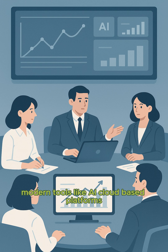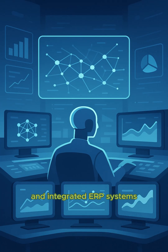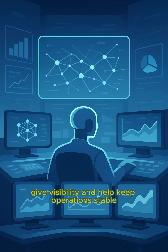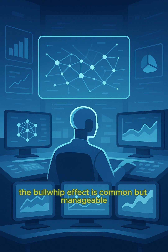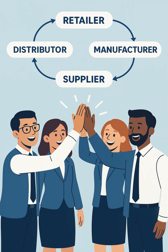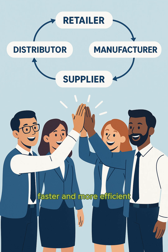Modern tools like AI, cloud-based platforms, and integrated ERP systems give visibility and help keep operations stable. The bullwhip effect is common, but manageable. Master it, and your supply chain becomes smarter, faster, and more efficient.